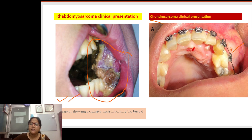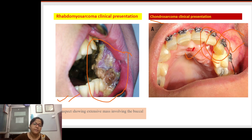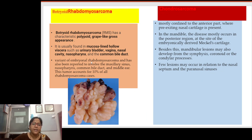In contrast, chondrosarcoma has an intact overlying surface and is not as extensive as rhabdomyosarcoma, though it may be associated with mobility or drifting of teeth. Palatal swelling and alveolar region swelling of the left maxilla with tooth drifting may also be present. The variants of rhabdomyosarcoma and chondrosarcoma will be discussed in a continuation of this lecture.